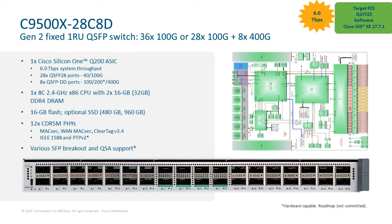Looking at the switch, we have 28 QSFP28 ports with speeds of up to 100 Gbps and 8 QSFP-DD ports with speeds up to 400 Gbps, for a maximum bandwidth of 6 terabits per second. Each port can operate at line rate without any blocking or oversubscription anywhere.